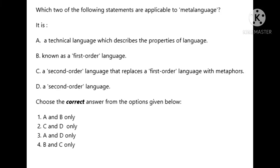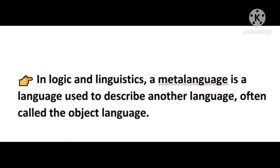The next question asks: which two of the following statements are applicable to meta-language? Please check the options and try to answer. The right answer is option number three. Meta-language is a technical language which describes the properties of language, and meta-language is a second order of language. In logic and linguistics, meta-language is a language used to describe another language, often called the object language.